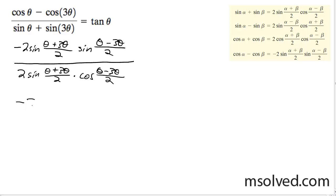So what we're going to have here on the numerator: 2 sine 4 theta divided by 2, sine of negative 2 theta divided by 2. The denominator we're going to get 2 sine 4 theta divided by 2 times cosine negative 2 theta divided by 2.